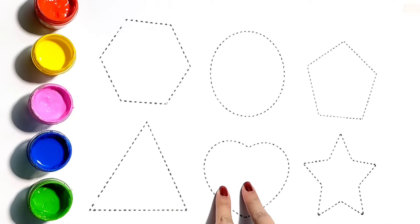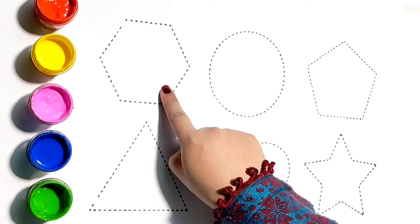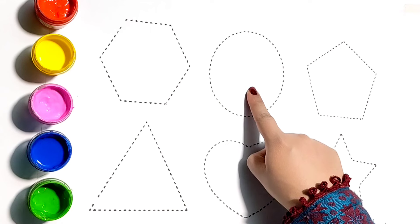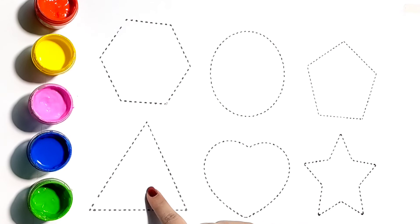Hello, little friends! Today we are going to learn 2D shapes: Hexagon, Circle, Pentagon, Triangle, Heart, and Star.